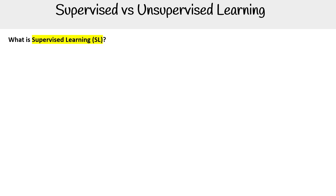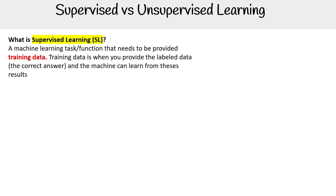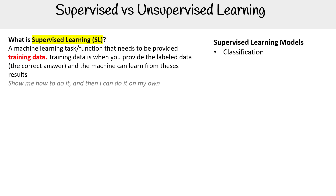So what is supervised learning? This is a machine learning task or function that needs to be provided training data. The training data is when you provide labeled data — the correct answers — and the machine can learn from those results. Show me how to do it, and then I can do it on my own. That's what's happening here. For supervised learning models, we have classification and regression.